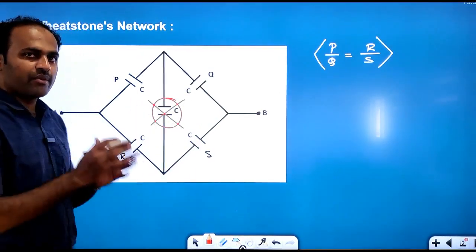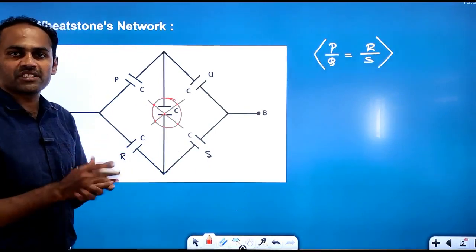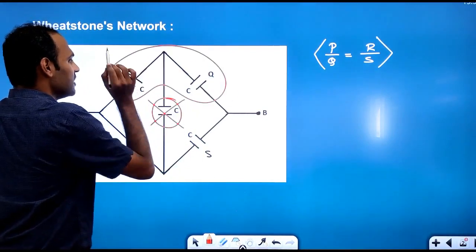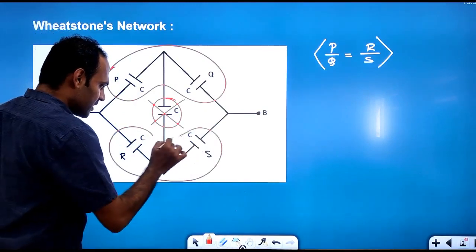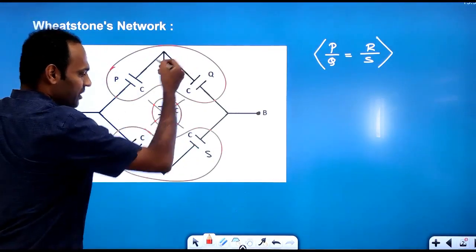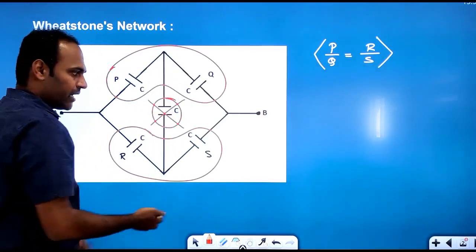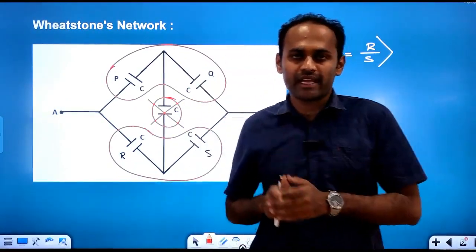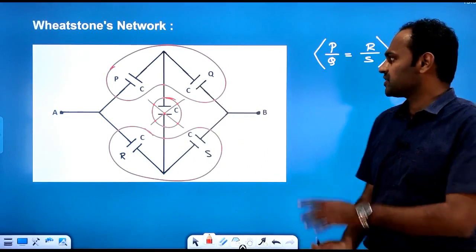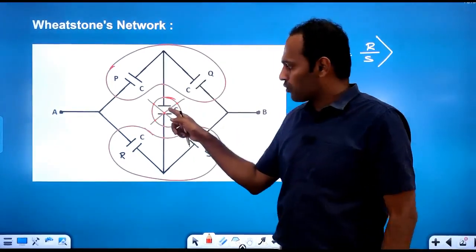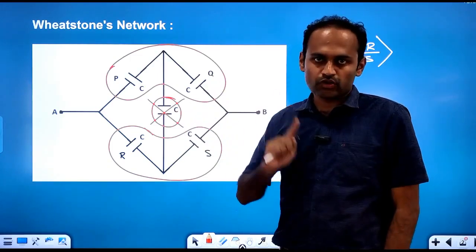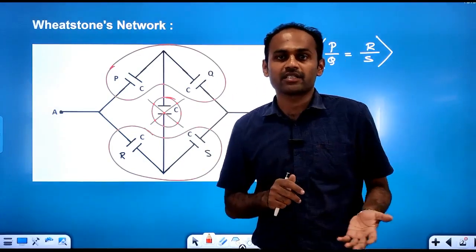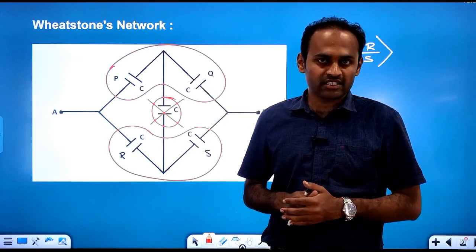If it is a balanced circuit, you have to remove the middle capacitor. If you remove this capacitor, the circuit gets simplified and we can get the effective capacitance between A and B. We have to check whether it is balanced or imbalanced. If balanced, we remove the middle capacitor and solve the combinations. If it is unbalanced, we will discuss that in the current electricity chapter.